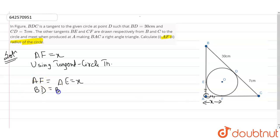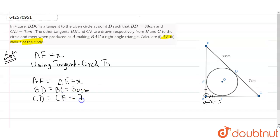Similarly, BD equals BE equals 30 centimeters, and CD equals CF equals 7 centimeters. These are the three tangent equalities we get from the theorem.